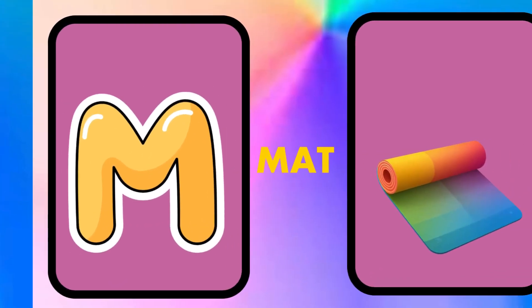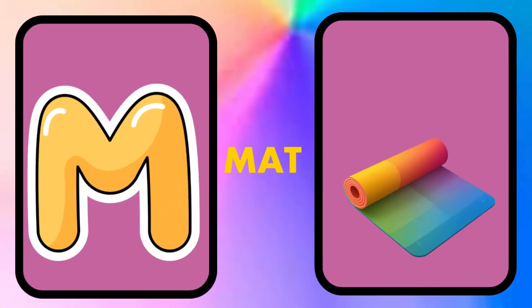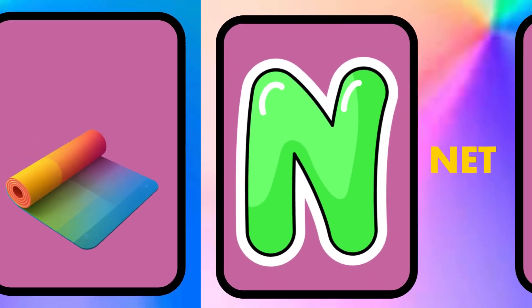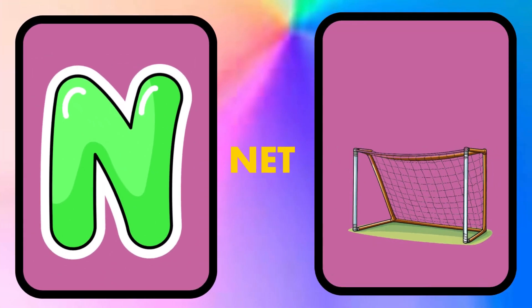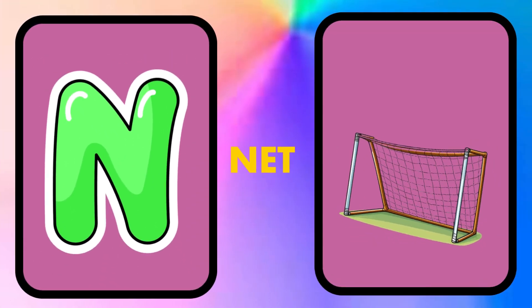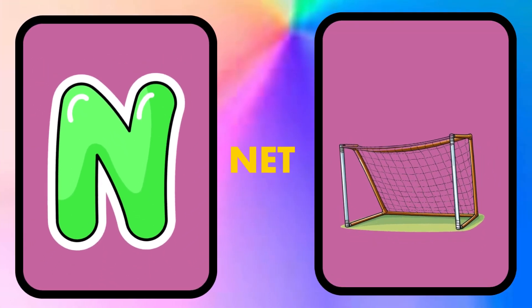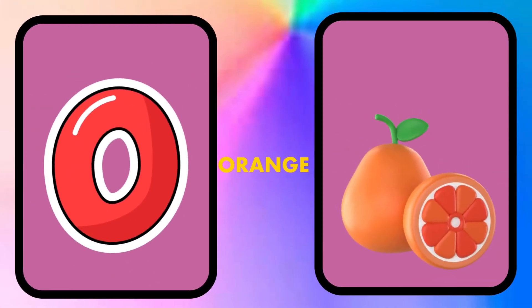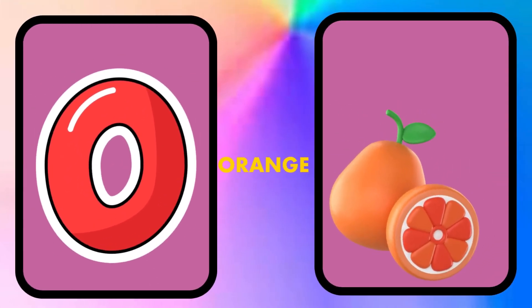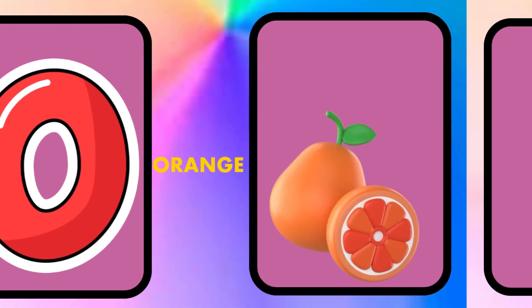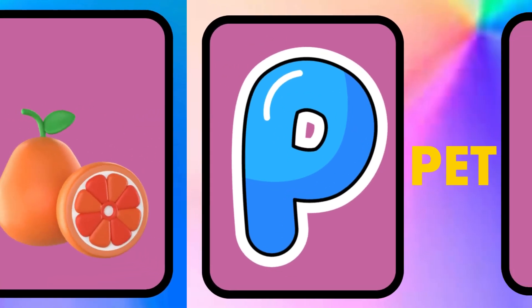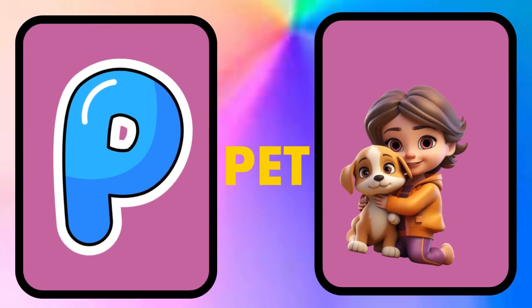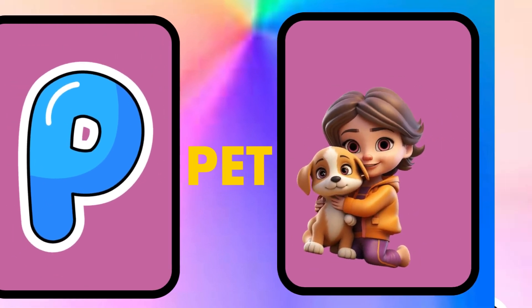M is for mat, m-m-mat. N is for net, n-n-net. O is for orange, o-o-orange. P is for pet, p-p-pet.